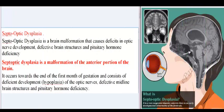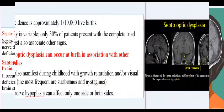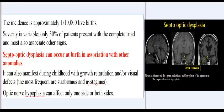Septo-optic dysplasia is a brain malformation that causes deficits in optic nerve development, defective brain structures, and pituitary hormone deficiency. It is a malformation of the anterior portion of the brain, occurring towards the end of the first month of gestation, consisting of hypoplasia of the optic nerves, defective midline brain structures, and pituitary hormone deficiency. The incidence is approximately 1 in 10,000 live births.